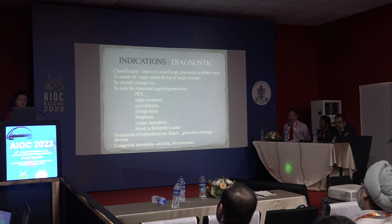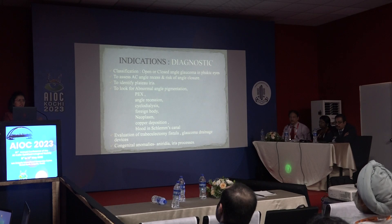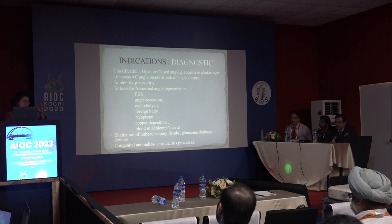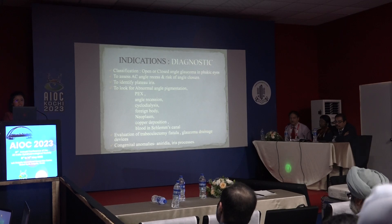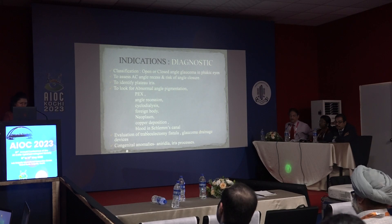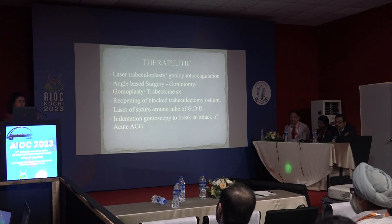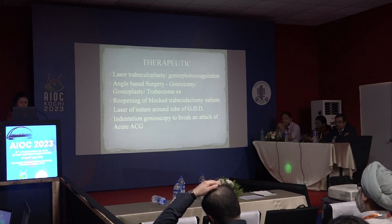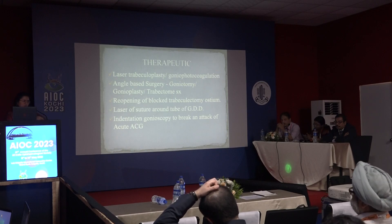The indications of gonioscopy include diagnostic and therapeutic categories. Diagnostically, the most important goal is to know whether the angle is closed or open; once closed, to classify whether it is PACS, PAC, or PACG; to identify plateau iris; and to identify secondary causes such as abnormal angle pigmentation, pseudoexfoliation, angle recession, failed trabeculectomy, glaucoma drainage devices, and congenital glaucomas. Therapeutically, gonioscopy is used for laser trabeculoplasty, angle-based surgeries like goniotomy and gonioplasty, reopening of a blocked ostium, and indentation gonioscopy to break an acute angle closure attack.